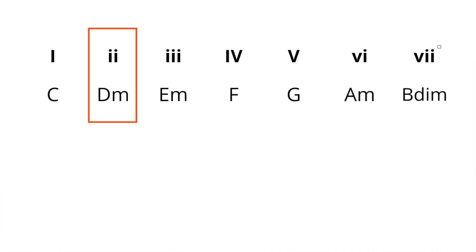To put that in concrete terms: the second chord of C major is D minor. D minor has a secondary dominant — the secondary dominant of D minor is a fifth above D. A fifth above D is A, so A7 can be used to resolve to the two chord of C major. We call it the five of the two chord: A7 to D minor.